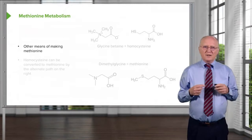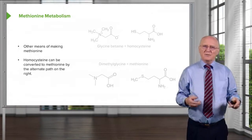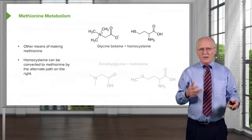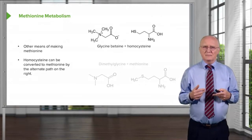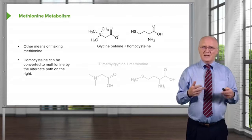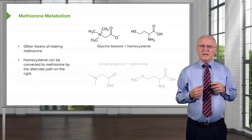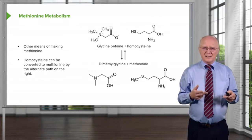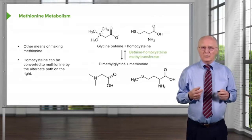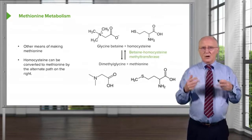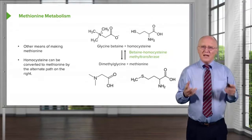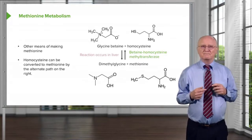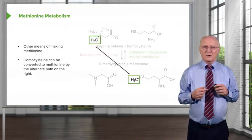There are other ways of making methionine. Homocysteine can be converted to methionine by an alternate pathway. This pathway is another way of getting a methyl group onto homocysteine — the difference between homocysteine and methionine is that methyl group. Glycine betaine is the source of the methyl group here; it combines with homocysteine to make dimethylglycine and methionine. The enzyme catalyzing this reaction is betaine-homocysteine methyltransferase, and the reaction occurs in the liver.